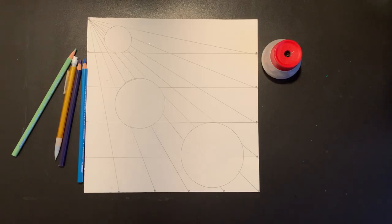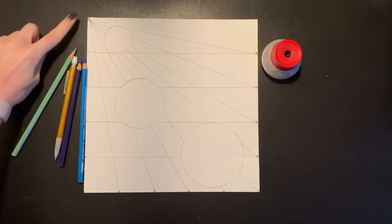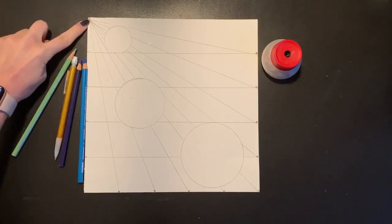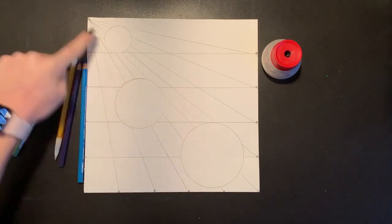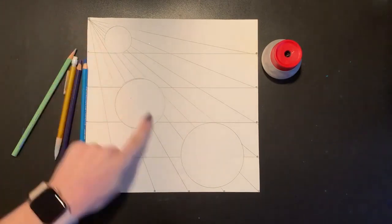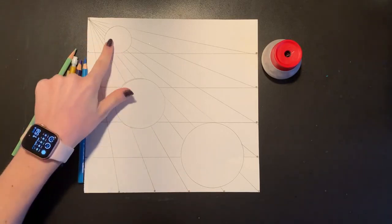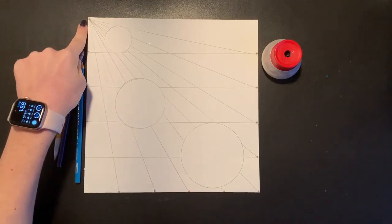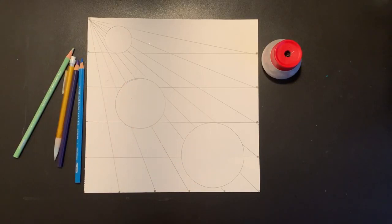A couple weeks ago we started sketching out our optical illusion picture. We used one-point perspective by creating a vanishing point in the top corner where all of our diagonal lines are meeting. Then we have our spheres coming out from that point, where the smallest one is closest to our vanishing point and the largest circle is furthest away.